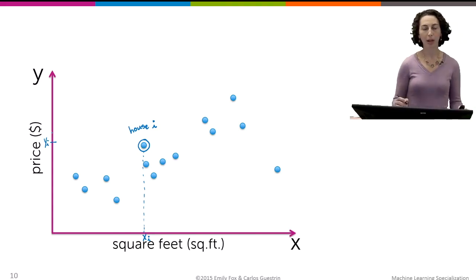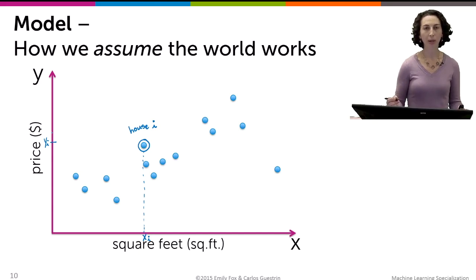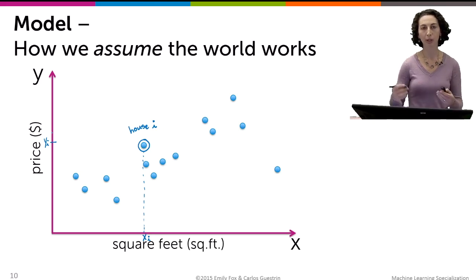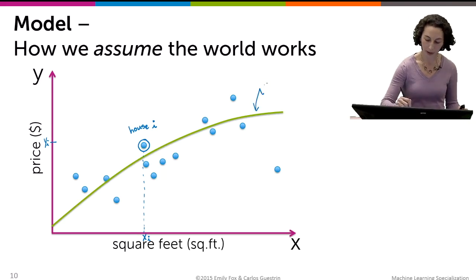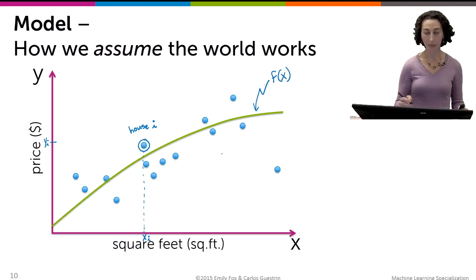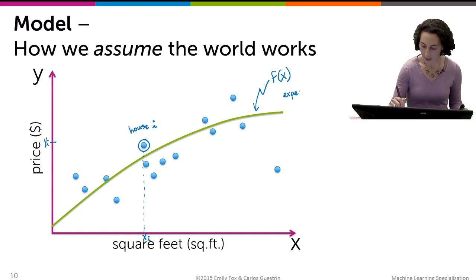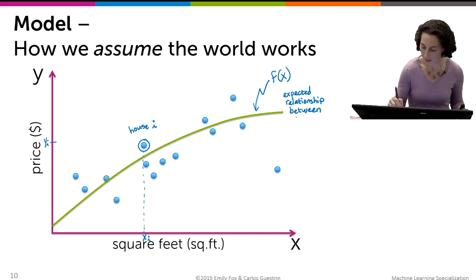This is our data. What our model represents is the expected relationship between x and y — that's what we're trying to figure out, because if we have that relationship we can use it for predicting the value of the house we'd like to list for sale. We're going to assume some functional relationship, which I'll call f of x, and that function represents the expected relationship between x and y.